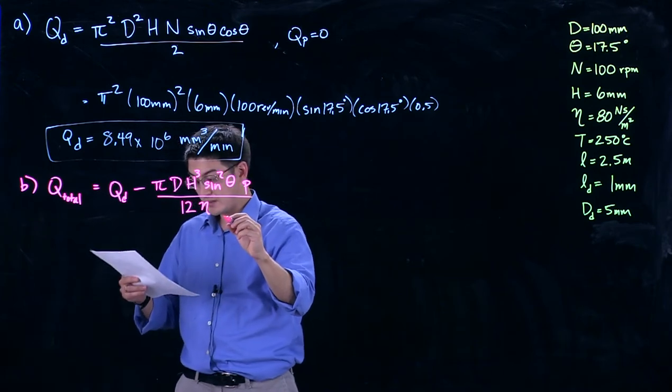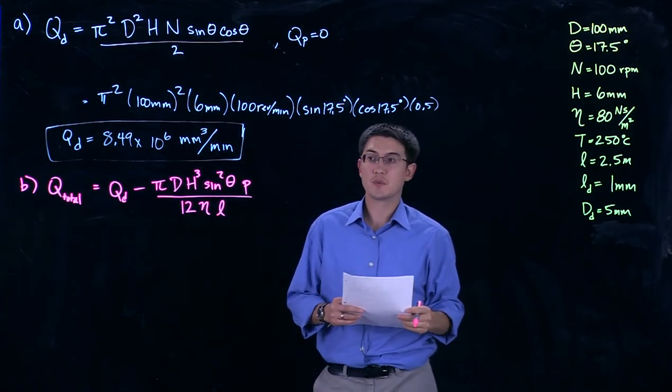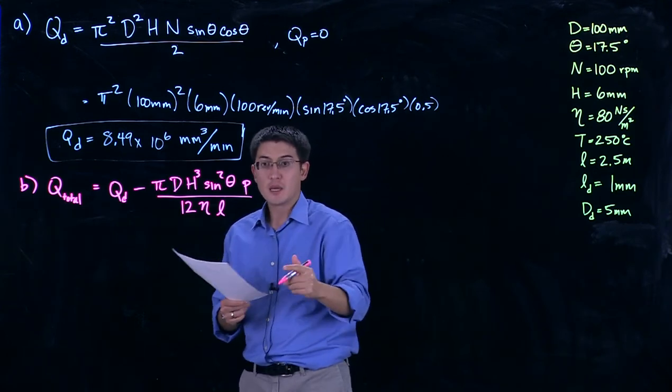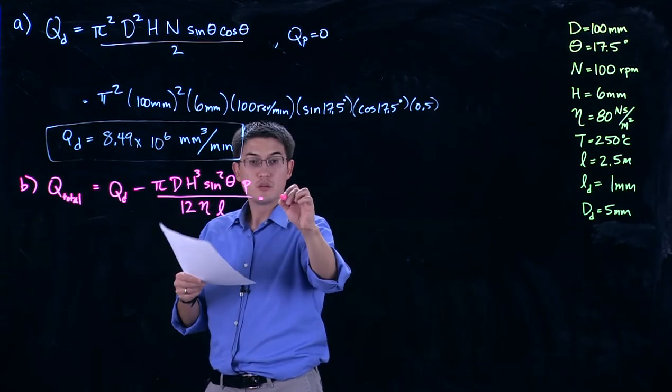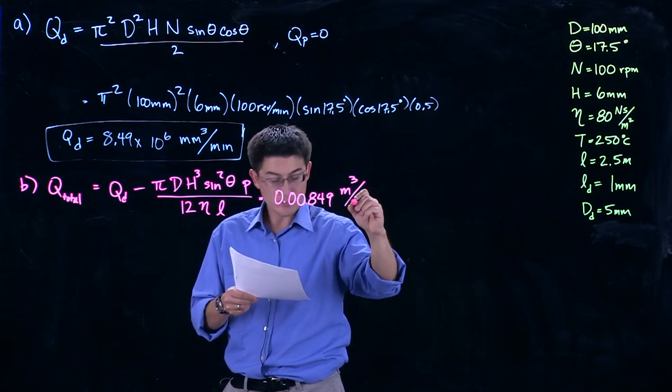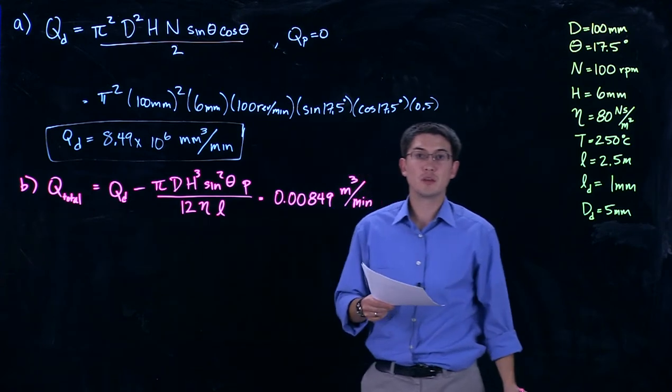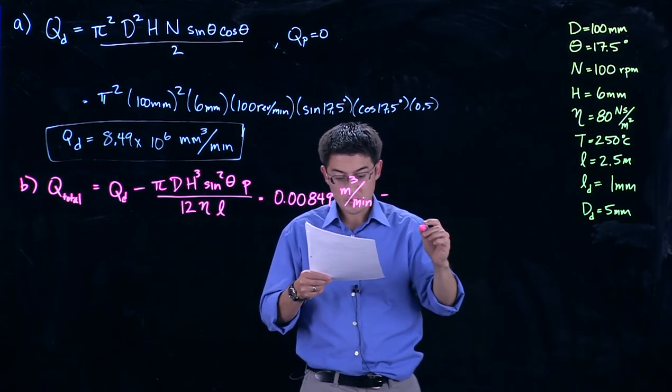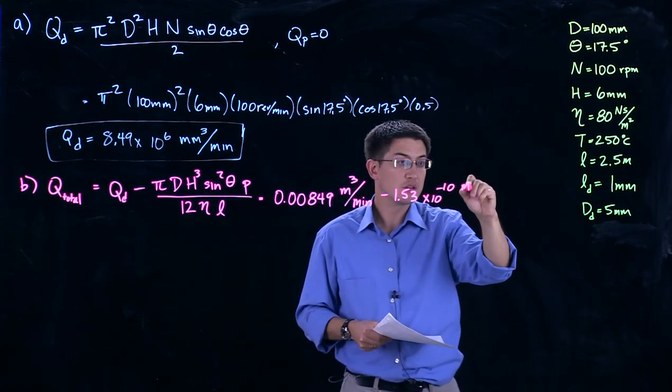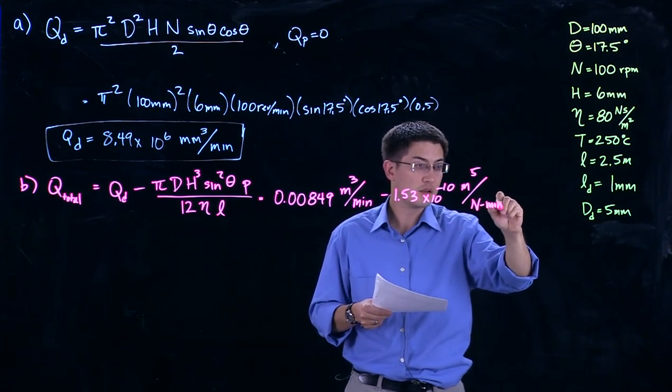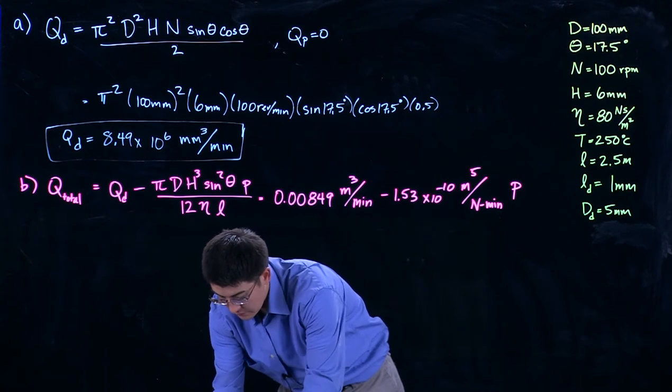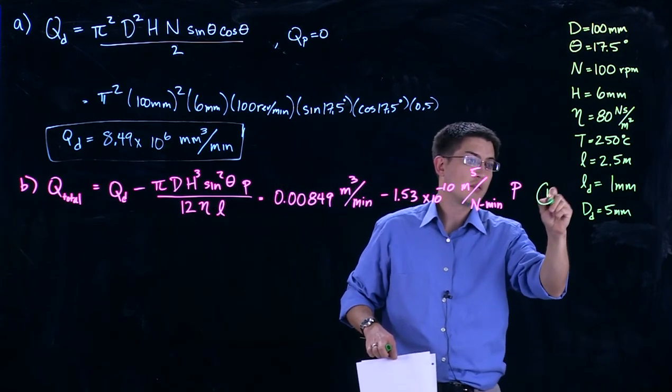Over 12 times the viscosity times the length of the extruder. So everything in here we do know except pressure. So we can plug in these values and we can get that this is going to be 0.00849 cubic meters per minute, notice I'm converting this to cubic meters, we started with cubic millimeters, minus 1.53 times 10 to the minus 10 meters to the fifth per Newton minute times pressure, which we don't know. I'm going to go ahead and mark this off as our equation one. So we're going to save this for later.